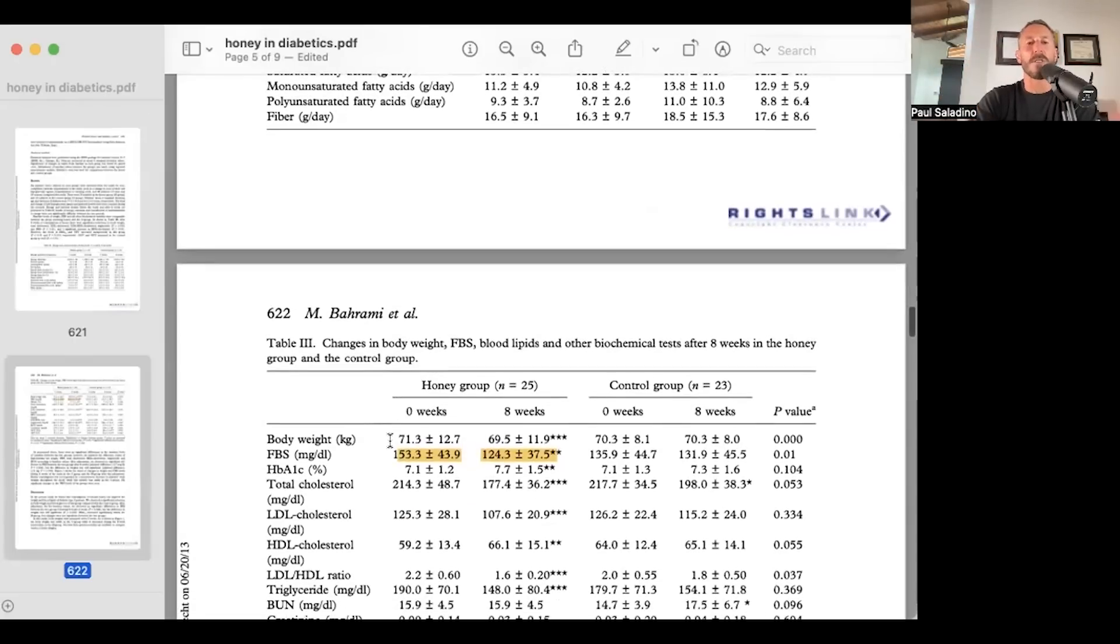You can see here in the honey group, they also lost weight. They started at 71.3 kilograms, plus or minus 12.7, and they ended the trial at 69.5 kilograms. That's basically two kilograms in eight weeks. So about four pounds, a little more than four and a half pounds over eight weeks. And all they did was give them more honey. They lost weight. The control group did not lose any weight, the exact same weight at the beginning. So the honey group lost weight. That was statistically significant.